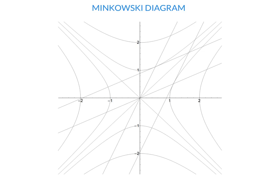Here in this picture, the horizontal axis represents the x-axis in reference frame k, and the vertical axis is the ct axis in k. The curves here, the hyperbolas, represent the lines of constant interval — the lines where ct squared minus x squared is constant.